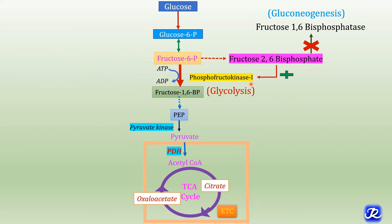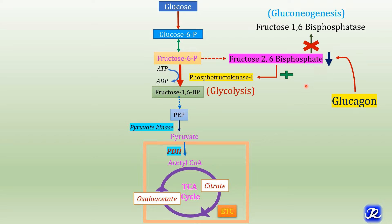Phosphofructokinase 1 is the rate-limiting enzyme in glycolysis, converting fructose 6-phosphate to fructose 1,6-bisphosphate. Fructose 2,6-bisphosphate, formed from fructose 6-phosphate, is an allosteric activator of phosphofructokinase 1 and increases the rate of glycolysis in the well-fed condition. In fasting and starvation, increased glucagon decreases the level of fructose 2,6-bisphosphate, removing activation of phosphofructokinase 1 and thereby decreasing glycolysis.